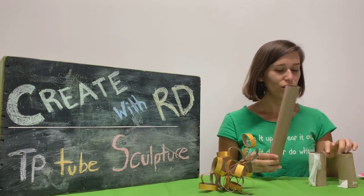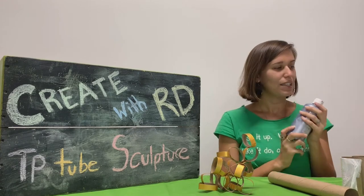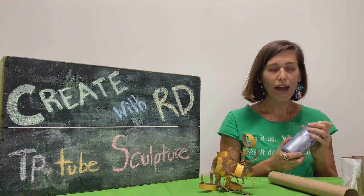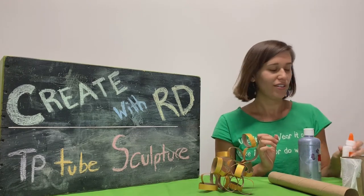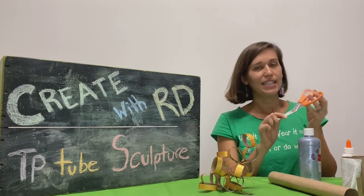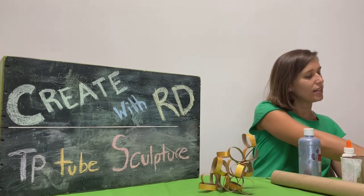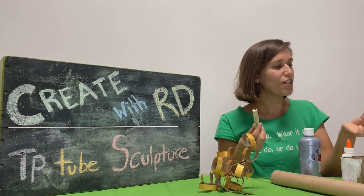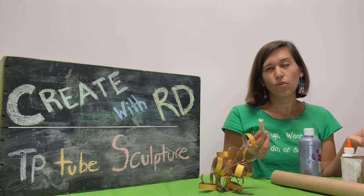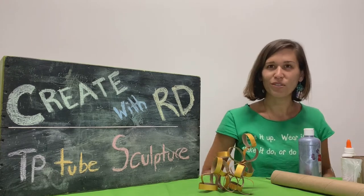So today we're going to use toilet paper tubes, some paint or markers, whatever you have at home, some regular old glue, scissors, and clothespins. You don't have clothespins? You can use a binder clip or a paper clip. Either will work. And we're going to construct our own paper sculpture.